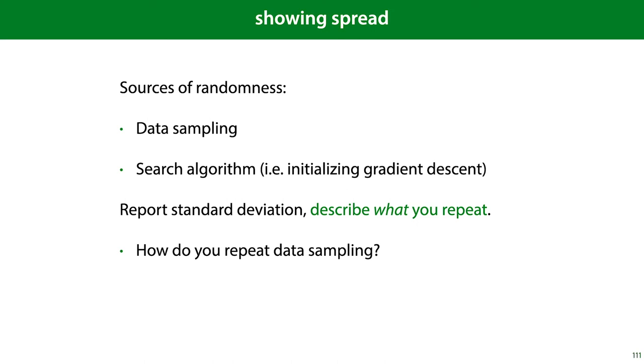Because we are given one data set, and on this data set, we have to do all our work. Another source of randomness may be aspects of your algorithm. For instance, the choice of initialization that you use in gradient descent. In general, in these cases, you want to report standard deviation rather than standard error or confidence intervals.